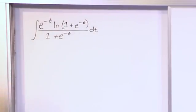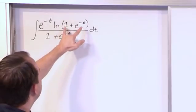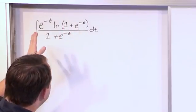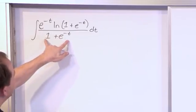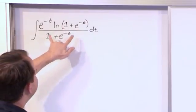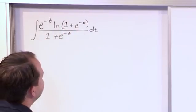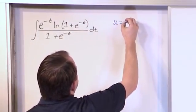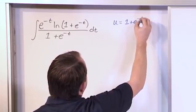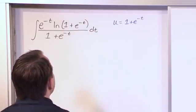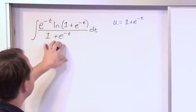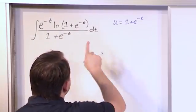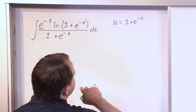With some experience you realize that you probably want the inside of this logarithm to be simple, so that you know you have a chance. You also don't like this denominator, and they match — so that's a big clue. As a first test, I'm going to say that u equals one plus e to the minus t, because it's going to simplify the inside of this logarithm and also simplify the denominator at the same time. Let's just try and see if we get a cancellation.